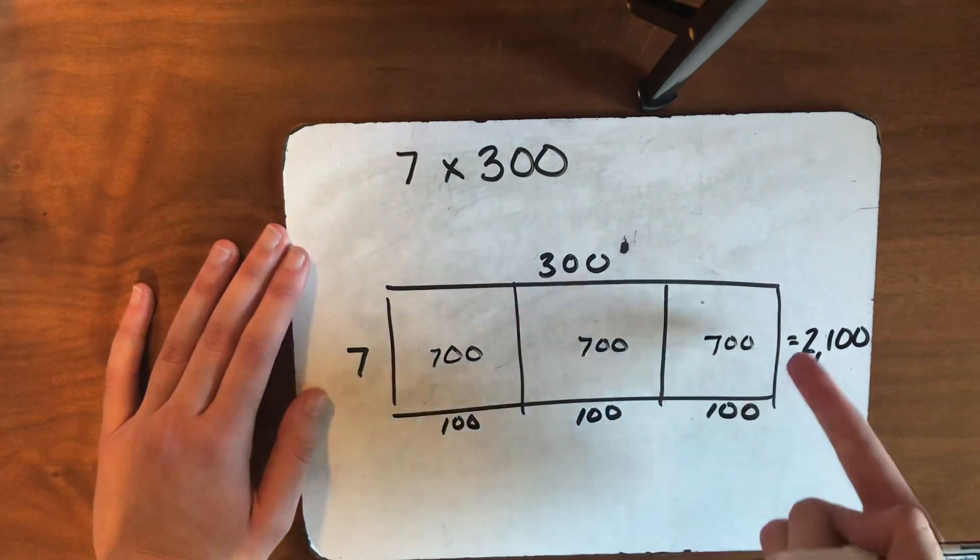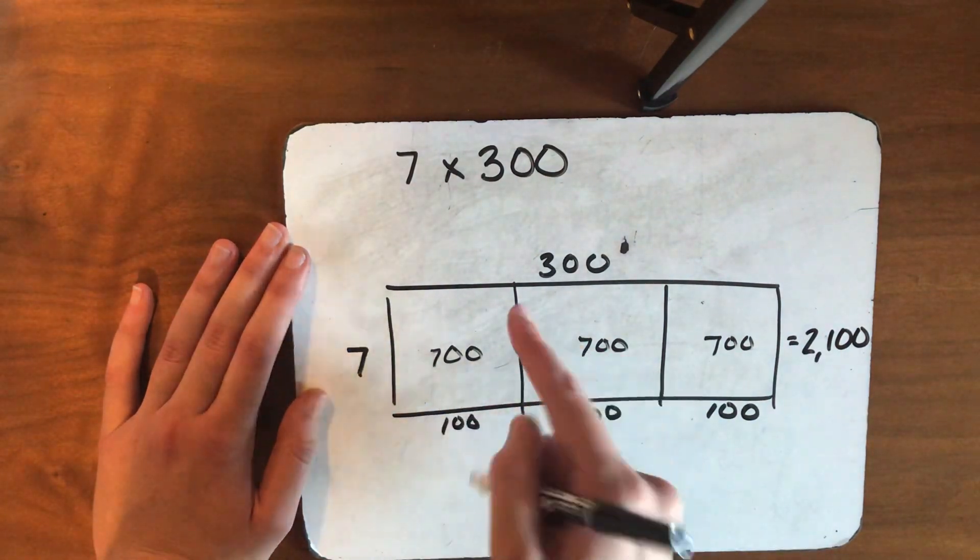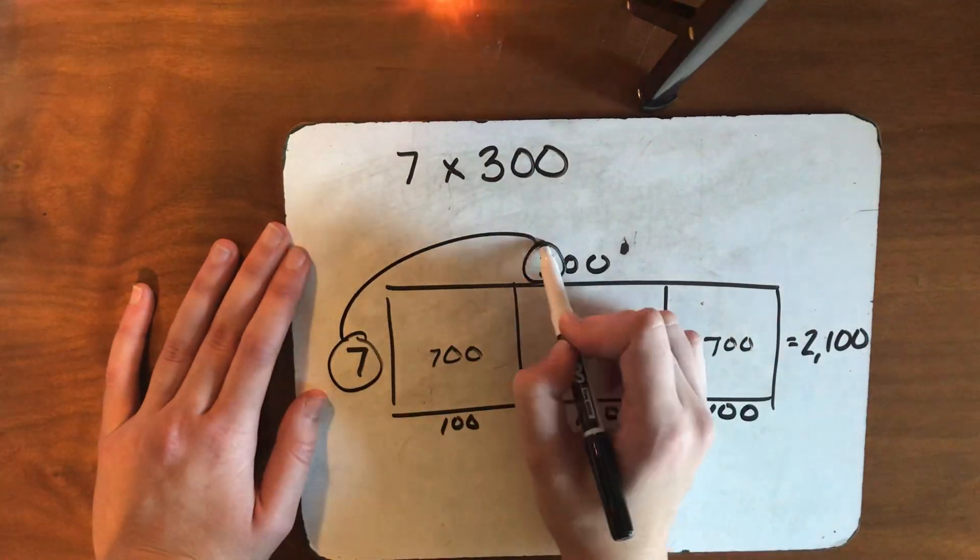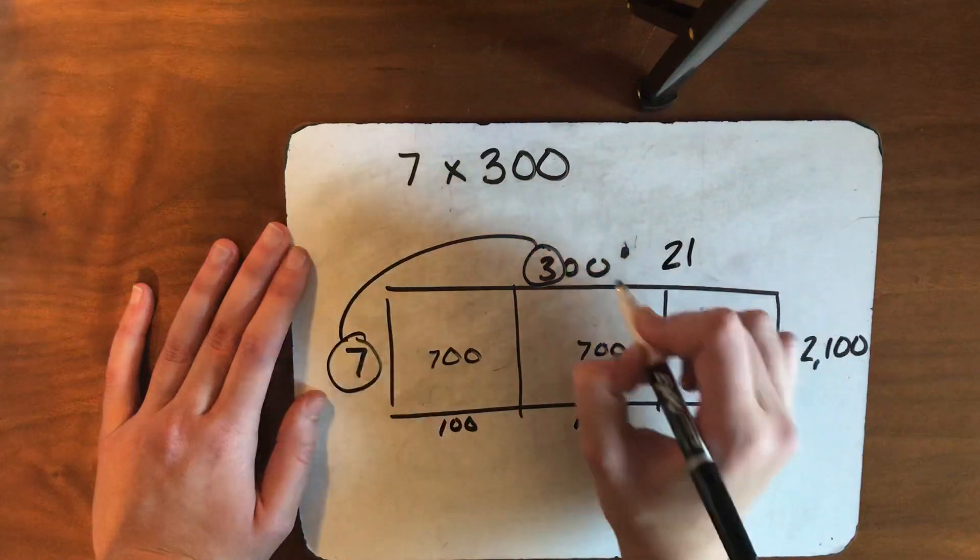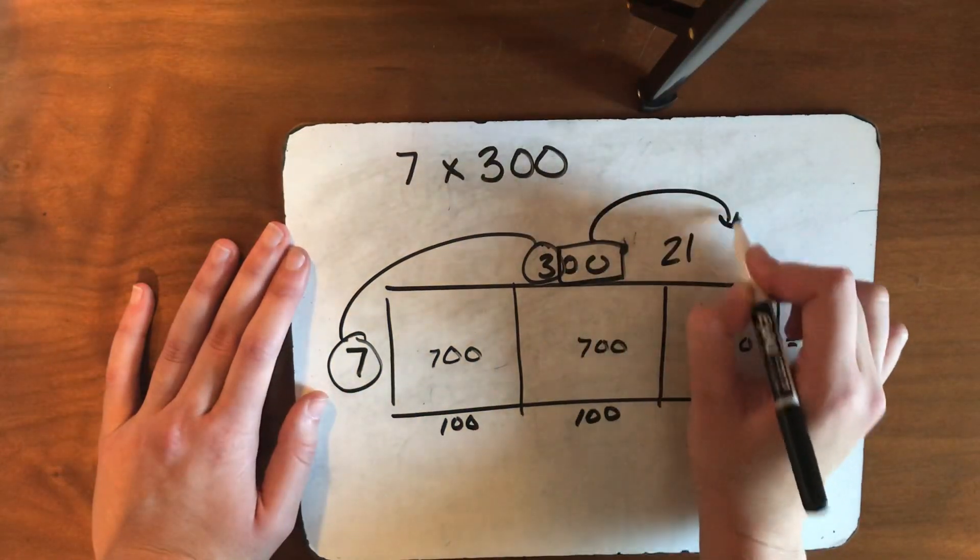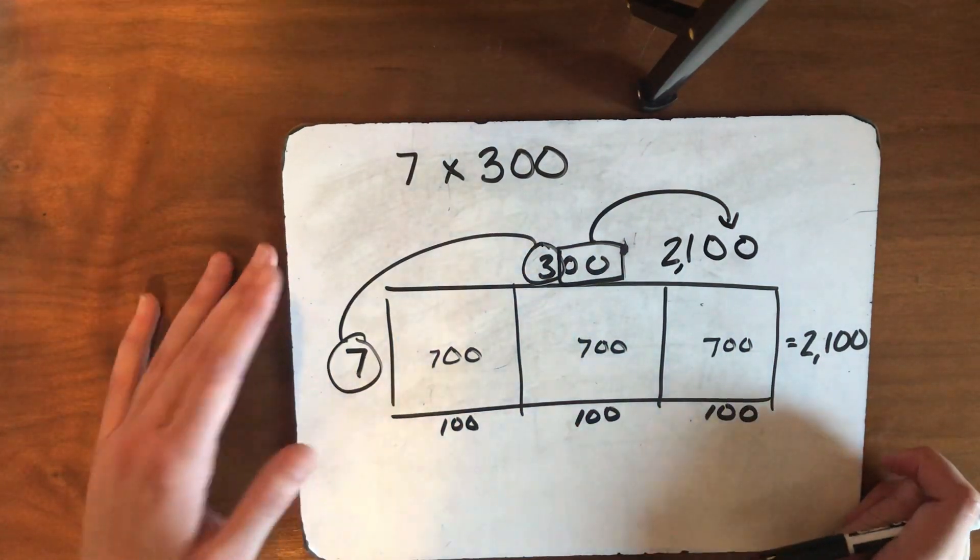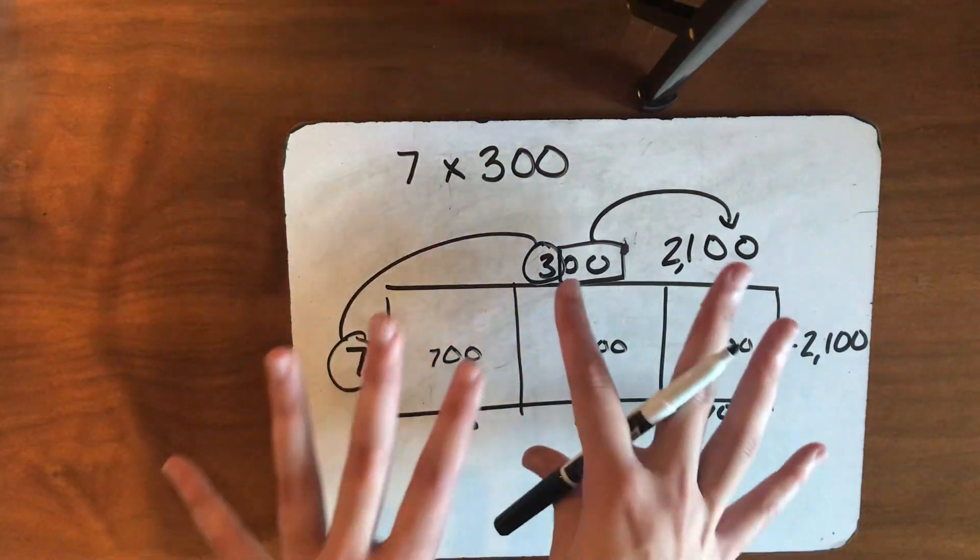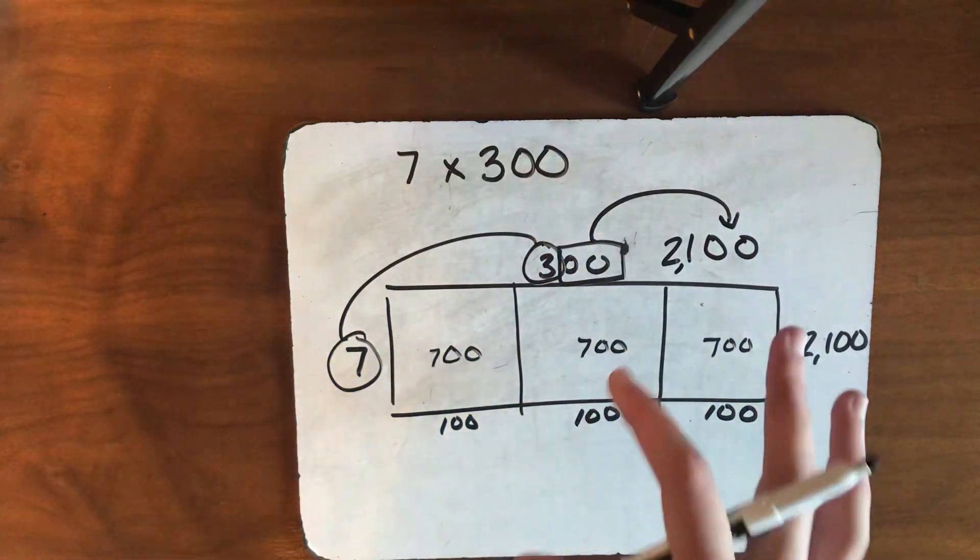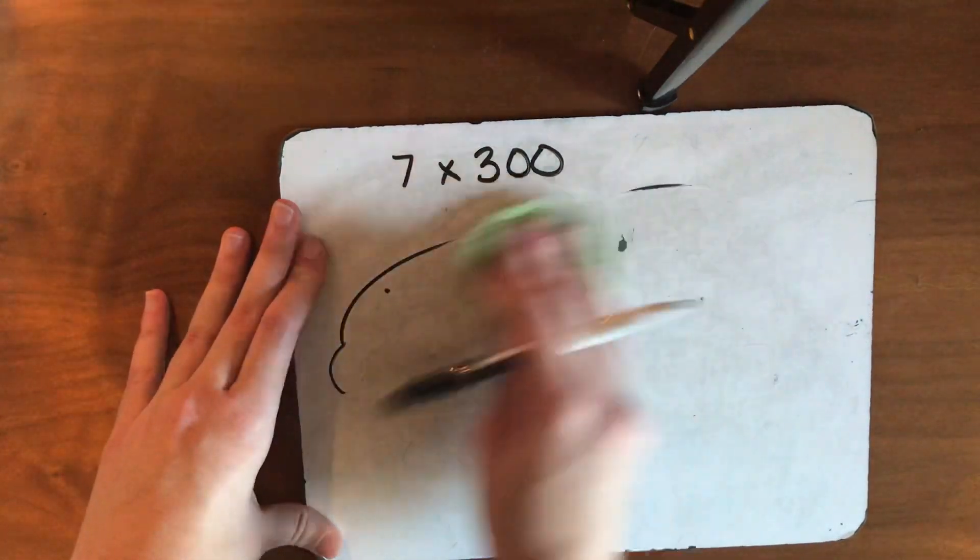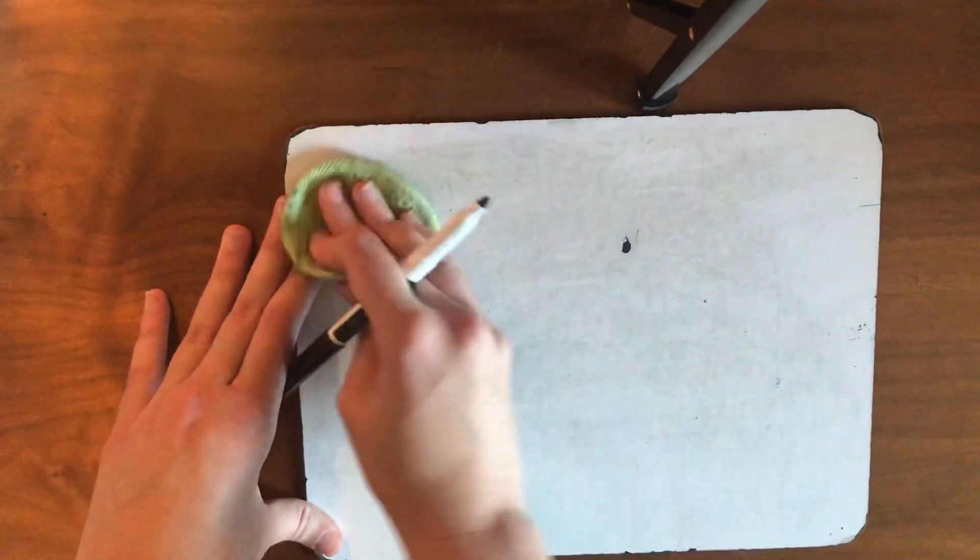Now, that was a way longer way because we know that if I have zeros there, they're just placeholders. I can just look at 7 times 3, 21, and take my two zeros and bring them over here and get the same answer. But, when I don't have zeros there, it can get very tricky. So, we're going to show the box method with bigger numbers and then we're going to kind of show the shortcut way. So, on we go.